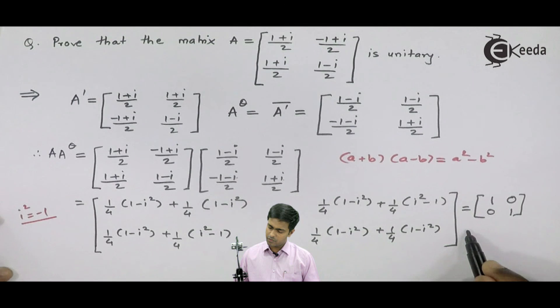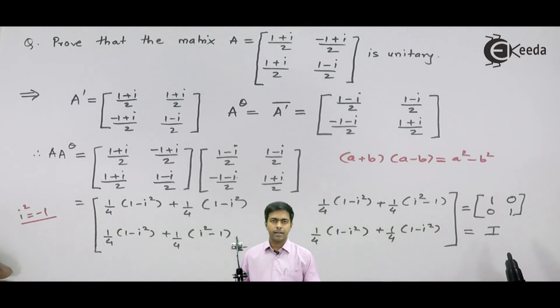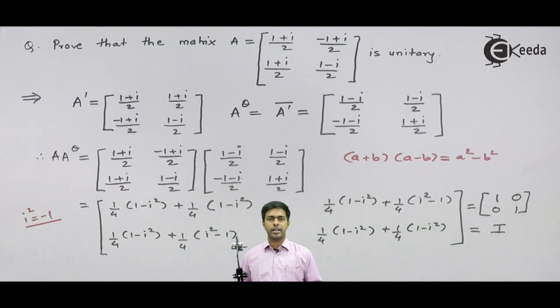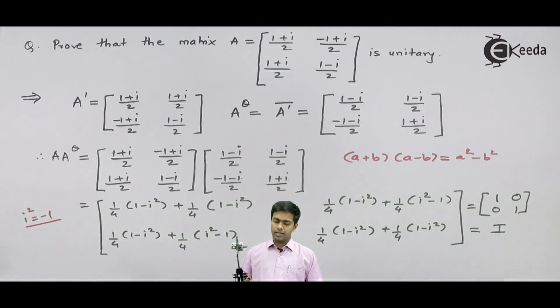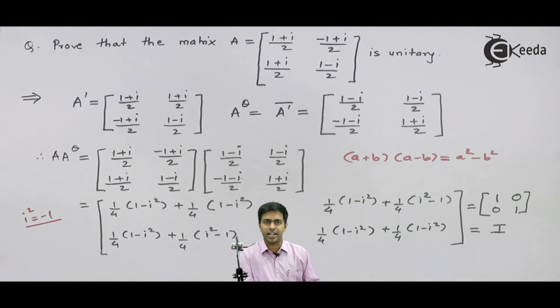And hence we are getting the identity matrix I. Therefore, we can say that the given matrix A is a unitary matrix.